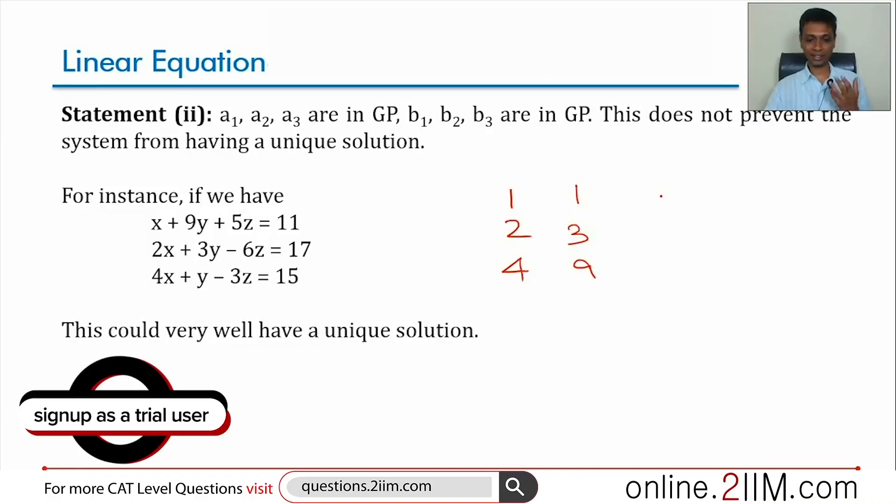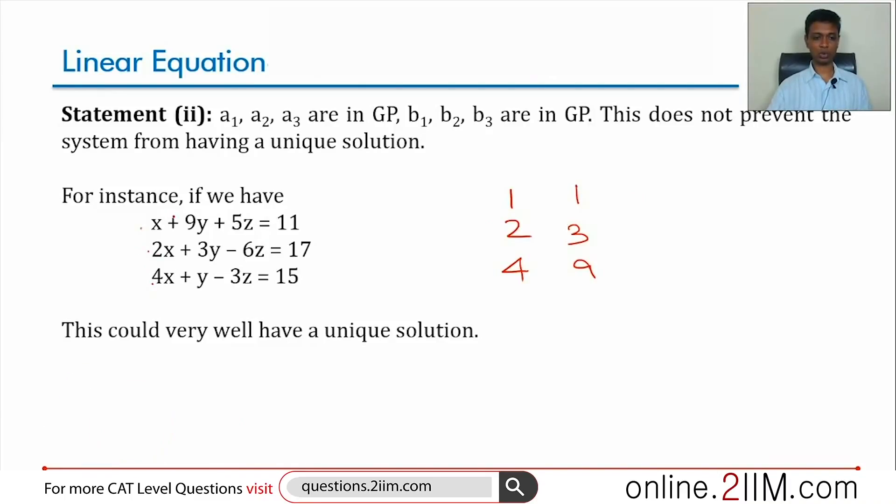c1, c2, c3 could be any other number. The common ratio need not be the same. The values need not be the same. That means there is nothing linking these two. We cannot add two equations, get the third. A system like this where it is 1, 2, 4 and 9, 3, 1 could very well have unique solution. This will not come under the category of cannot have a solution. This can happen.